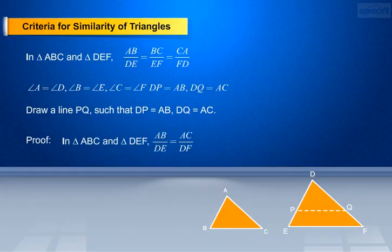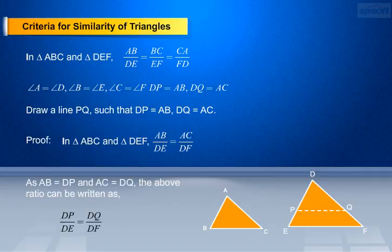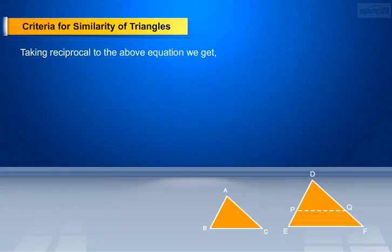Proof: from the figure, in triangle ABC and triangle DEF, given that AB/DE equals AC/DF. Since AB equals DP and AC equals DQ, the above ratio can be written as DP/DE equals DQ/DF. Taking the reciprocal of the above equation, we get DE/DP equals DF/DQ — make it equation 1.